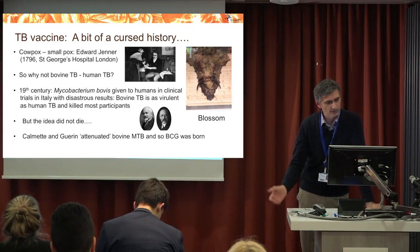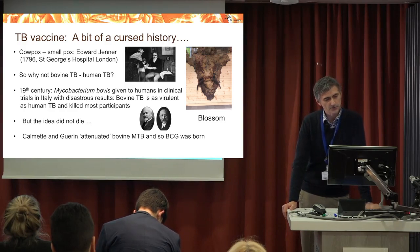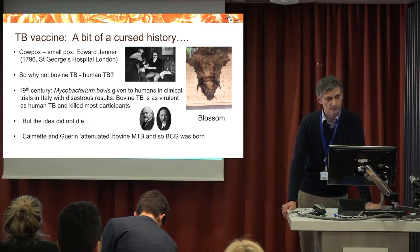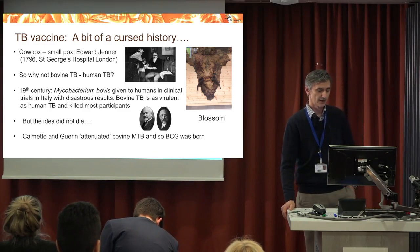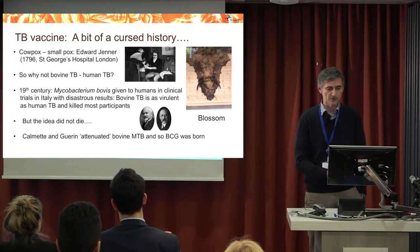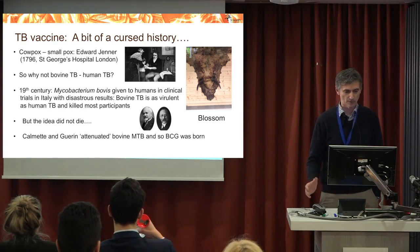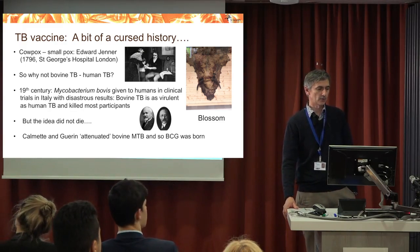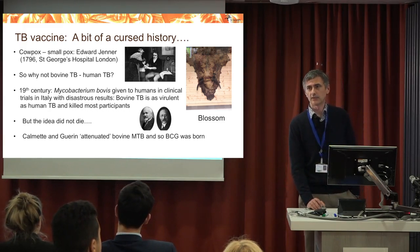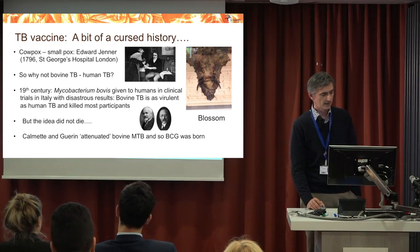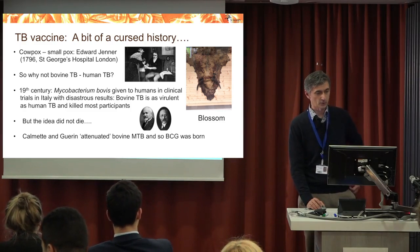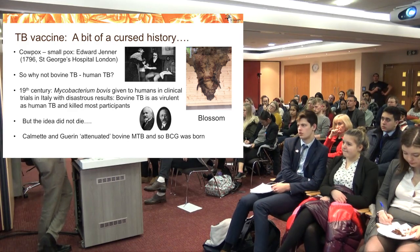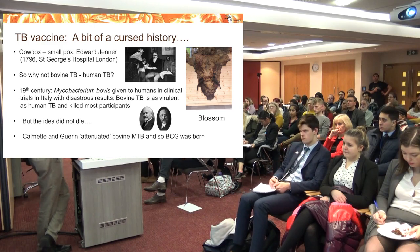TB vaccine history is a bit of a cursed one. It started with Edward Jenner of St. George's, who developed the original concept of vaccination — immunizing a boy with cowpox and deliberately exposing him to virulent smallpox, which the boy survived. Because TB was also a major disease, some thought the same approach could work. A clinical trial in Italy gave bovine TB to humans, which resulted in disaster: many participants contracted TB and died. They learned that bovine TB is as virulent in humans as human TB.